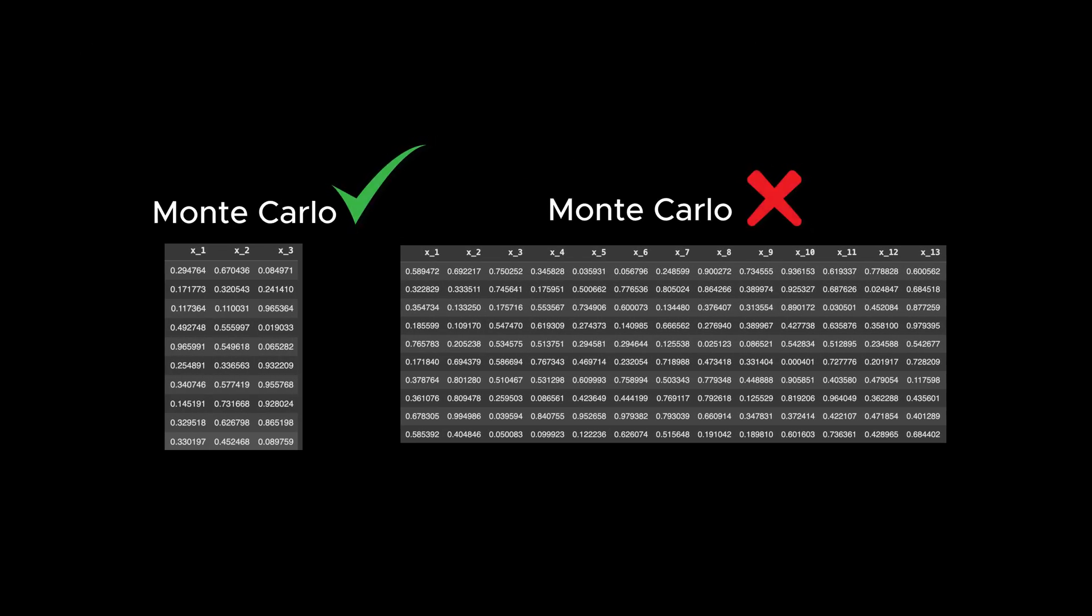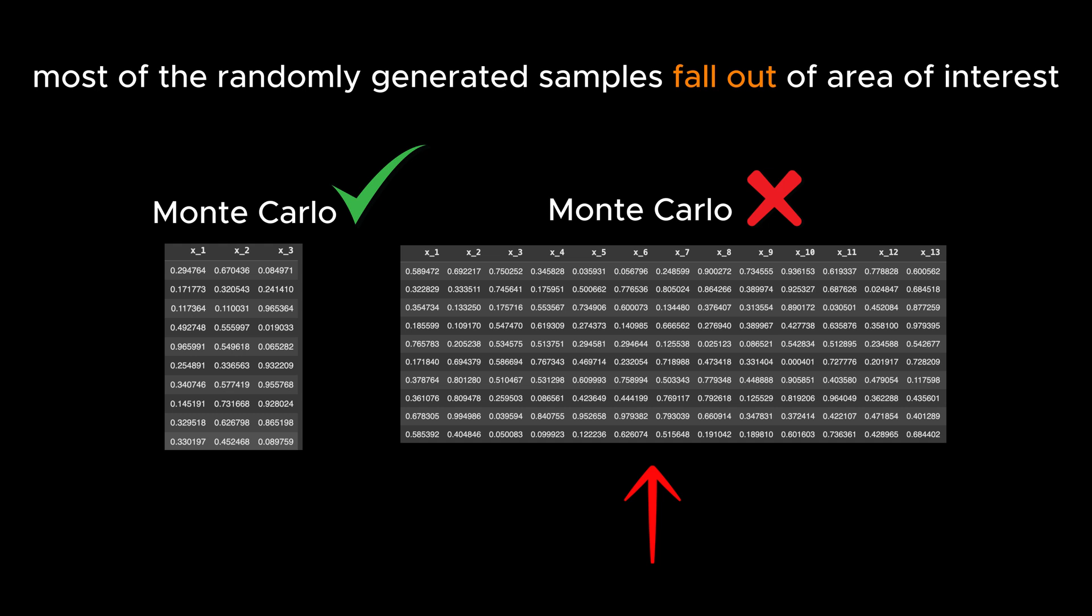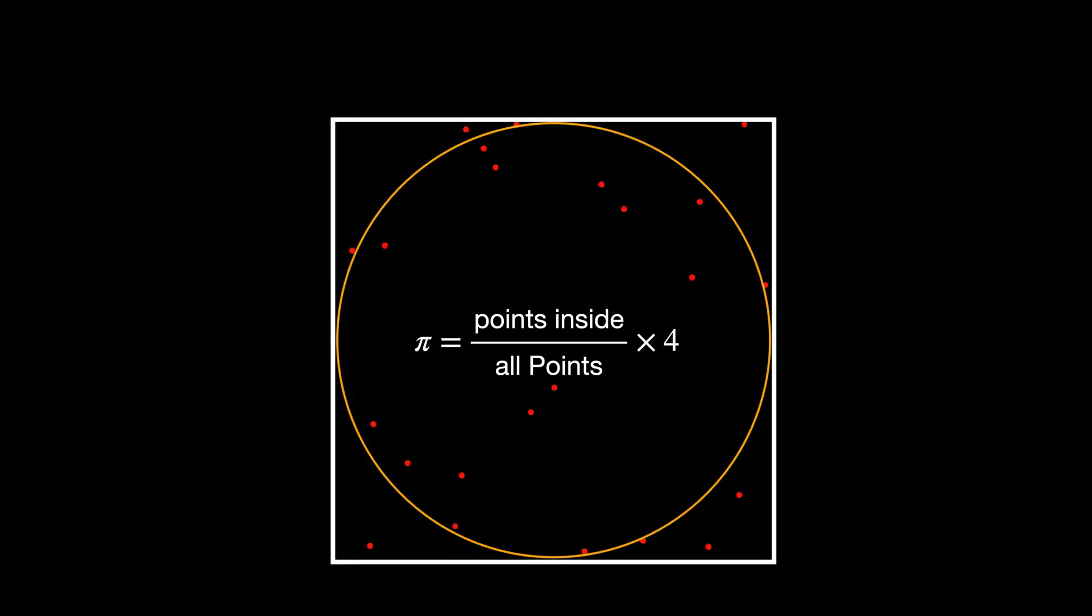But randomness alone isn't enough for some problems with a very high number of variables. The reason is that when the number of variables, which means the dimension of the problem, is very high, most of the randomly generated samples fall into non-interesting regions.